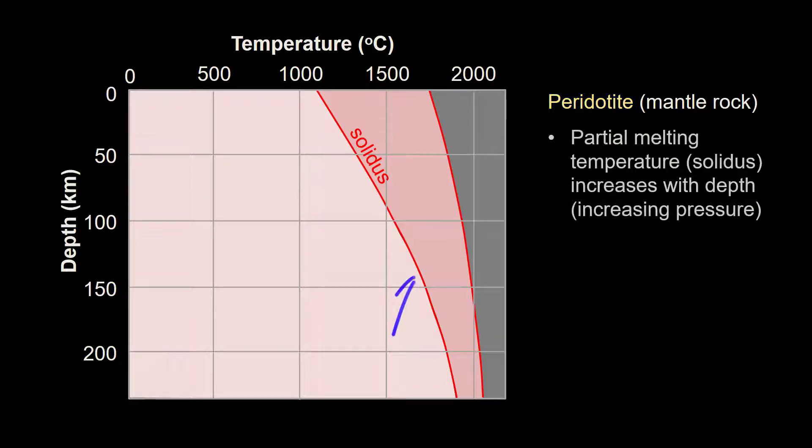This line, known as the solidus, indicates the temperature necessary to start melting peridotite at different depths. Remember that pressure increases with depth, so it takes much higher temperatures to melt rocks the deeper we go.